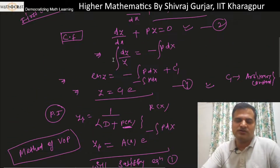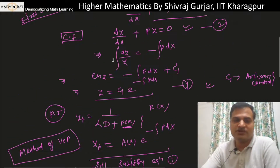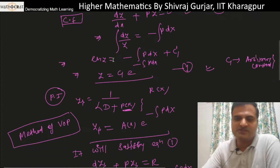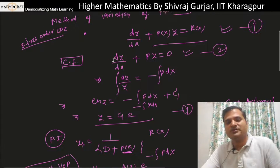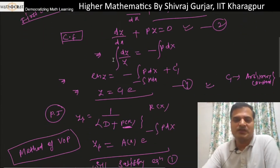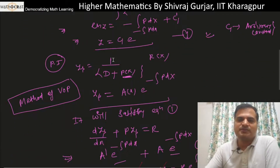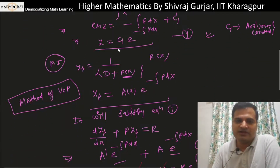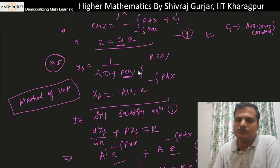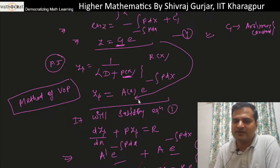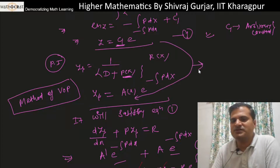This method is called variation of parameters because we varied the parameter — we converted the constant c₁ into a variable function a(x). That's why it is known as the method of variation of parameters.